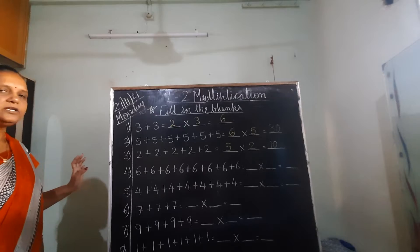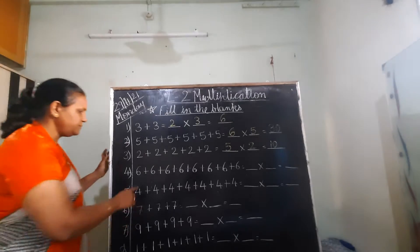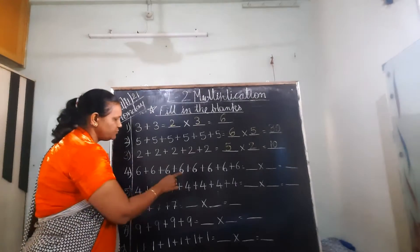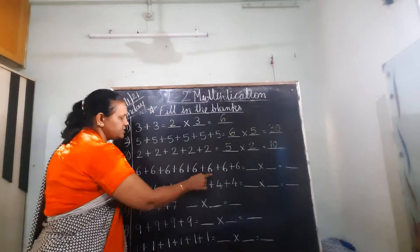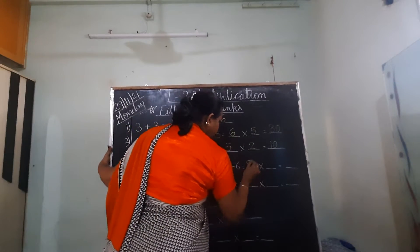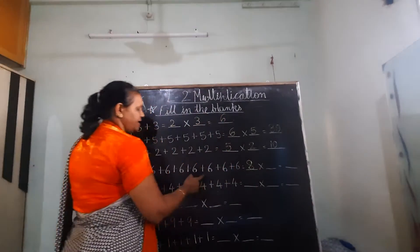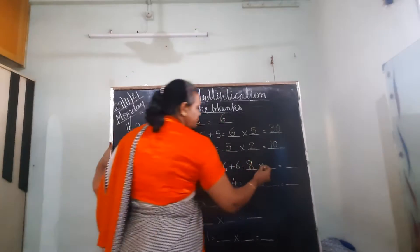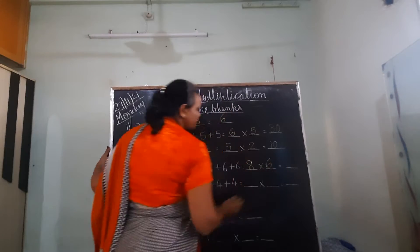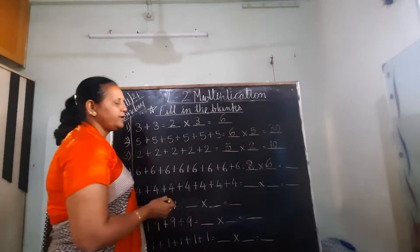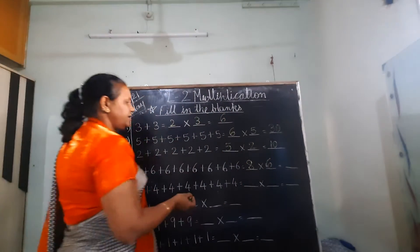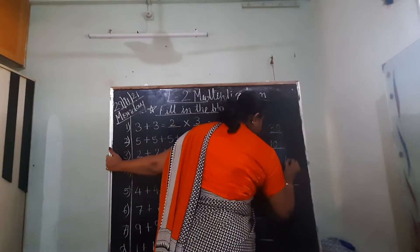6 is repeated for how many times? 1, 2, 3, 4, 5, 6, 7, 8. So write down 8 here. And which number is repeated? 6. 8 6's are 48.